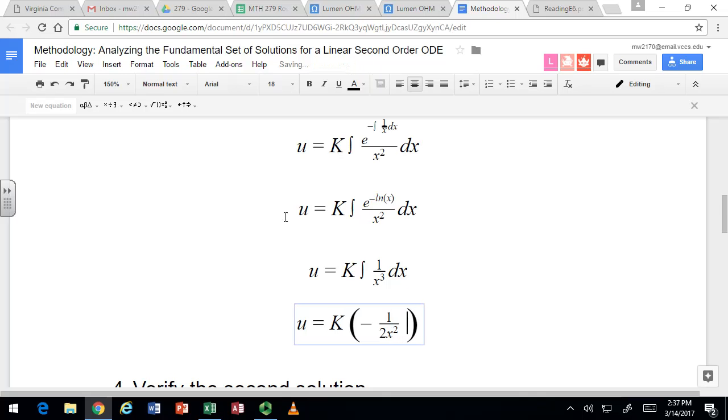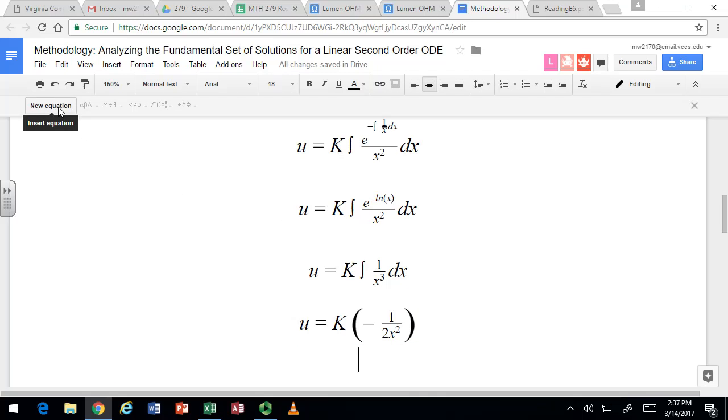So you can choose k at the end here to make this as clean as you want. It's chosen for convenience. If there's nothing to really cancel out, you could just make k equal 1. But here it would be beneficial to make k = -2, because then you can just write this as 1/x².